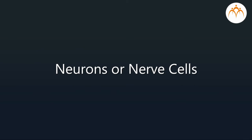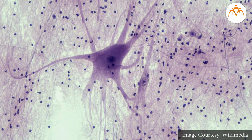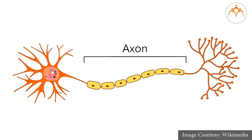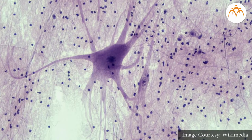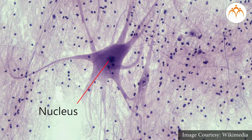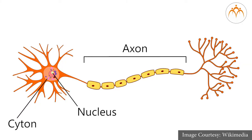A multipolar neuron is elongated. The cytone is about 0.1 millimeter in diameter, and the axon could be up to one meter long. The nucleus is large, circular, and is present in the center of the cell. It has a large star-shaped cytone or cell body, which is nucleated.